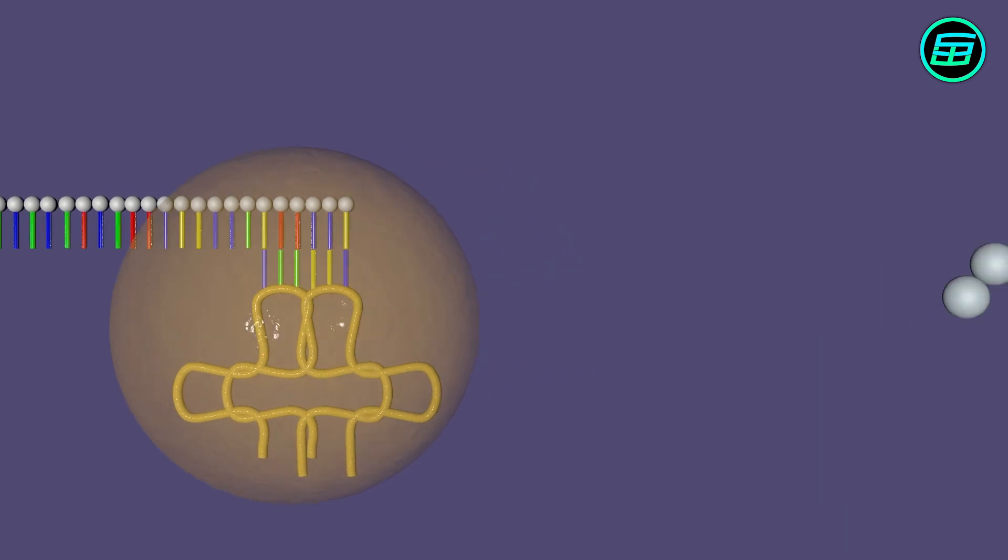Once the synthesis is complete, the amino acid chain that's formed is called a polypeptide. Finally, this is folded in a very specific way to make a protein.